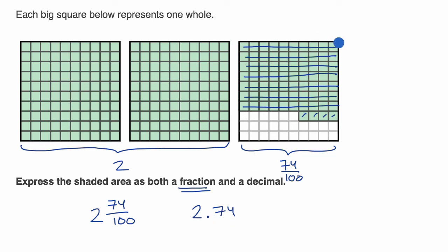We have 1, 2, 3, 4, 5, 6, 7 tenths. And then we have four more hundredths beyond that. So you could think of it as 74 hundredths or 7 tenths and 4 hundredths. But either way, we are done.